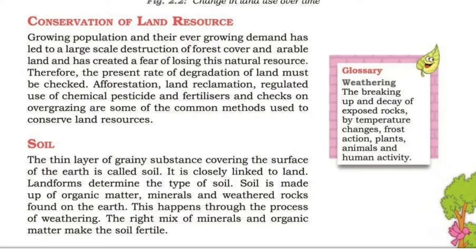The soil profile consists of the following layers: the topsoil with humus and vegetation; subsoil with sand, silt, and clay; weathered rock material; and at the bottom, parent rock. This is the detail of the soil profile.